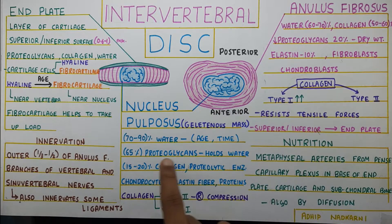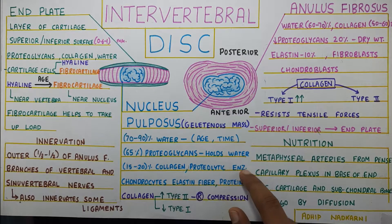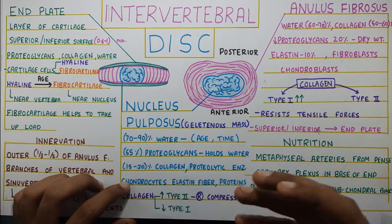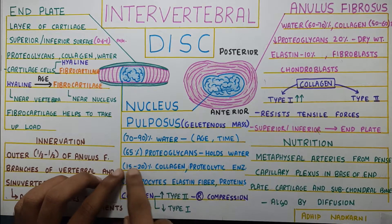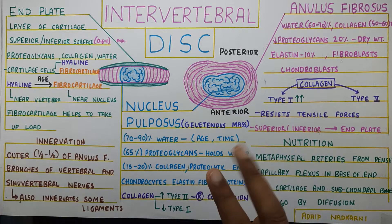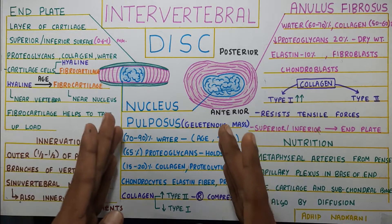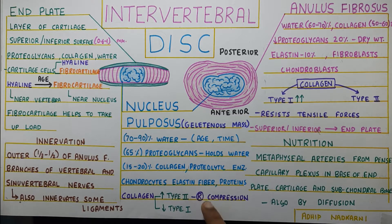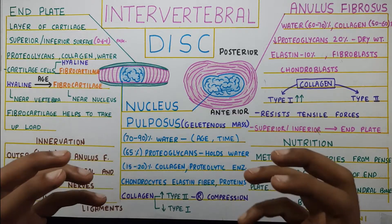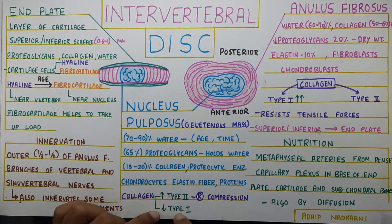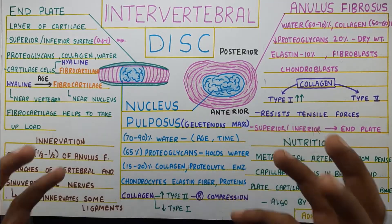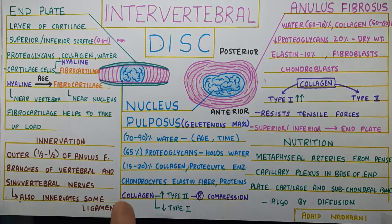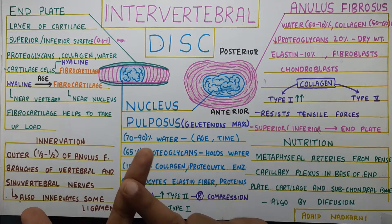There is 15 to 20 percent collagen in the nucleus pulposus, along with some other elements such as proteolytic enzymes, chondrocytes, elastin fiber, and proteins. There are two types of collagen: type 1 and type 2. The nucleus pulposus has more type 2 collagen, which helps in resisting compressive forces. Type 2 collagen resists compressive forces, whereas type 1 collagen prevents distractive forces. This is a very important distinction to remember.